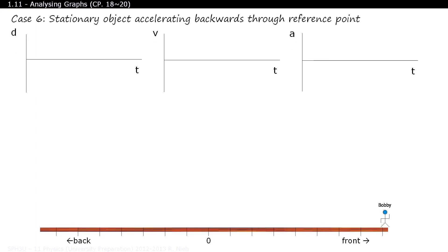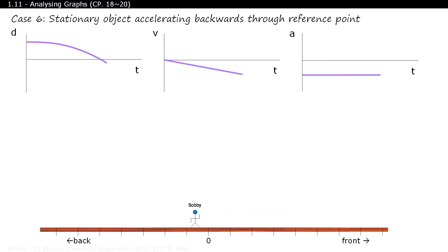Okay Bobby, start from there and accelerate backwards. On your marks, get set, go! The DT graph looks like a curve opening downwards. Since it has a slope of zero at the beginning and the slope becomes more and more negative, that's why the VT graph starts from zero and the values are decreasing. The slope of the VT graph is negative, and that's why the AT graph also has data points that are negative. So in this case, acceleration is negative because you're accelerating in the opposite direction.